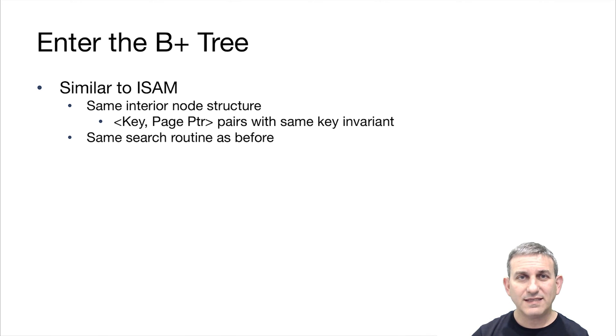It's similar to ISAM in a number of ways. It has the same interior node structure, so it's made up at its interior node of key page pointer pairs, and we have the same invariant that things down the pointer are greater than or equal to the value of the key. It's got the same search routine as before, except for the fact that we won't have any overflow pages to deal with.